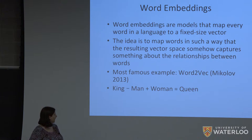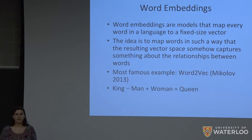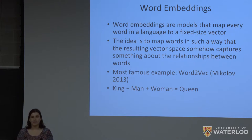The most famous example of this is a model called Word2Vec from 2013. Their classic example is: if you look at the vectors for the words king, man, woman, and queen — if you take the vector for king, subtract the vector for man, and add the vector for woman, you get approximately the vector for queen. This shows that these embedding spaces are somehow capturing something fundamental about how words relate to each other.